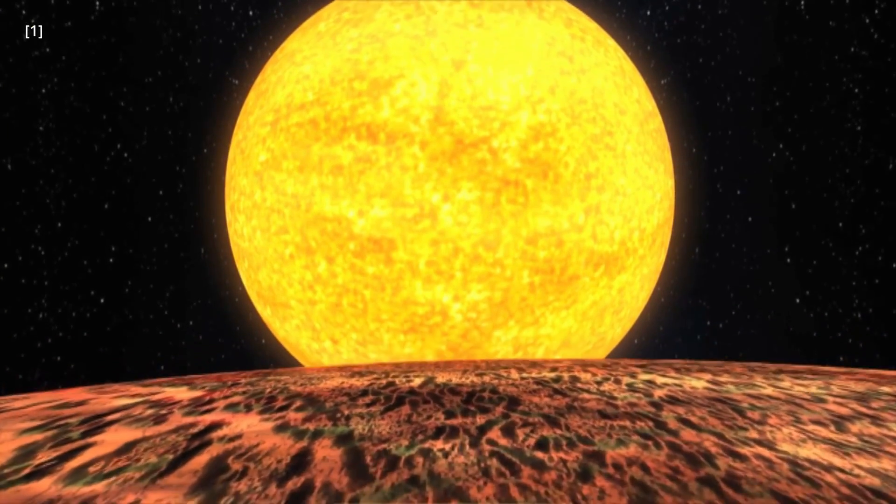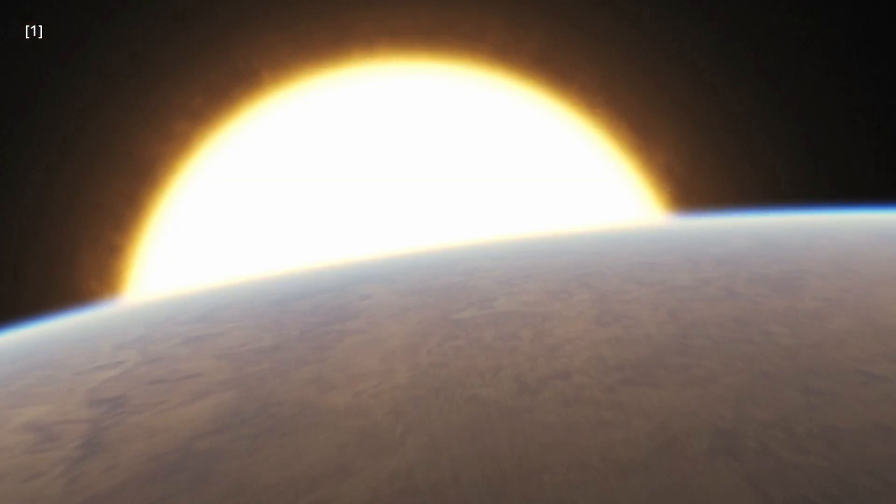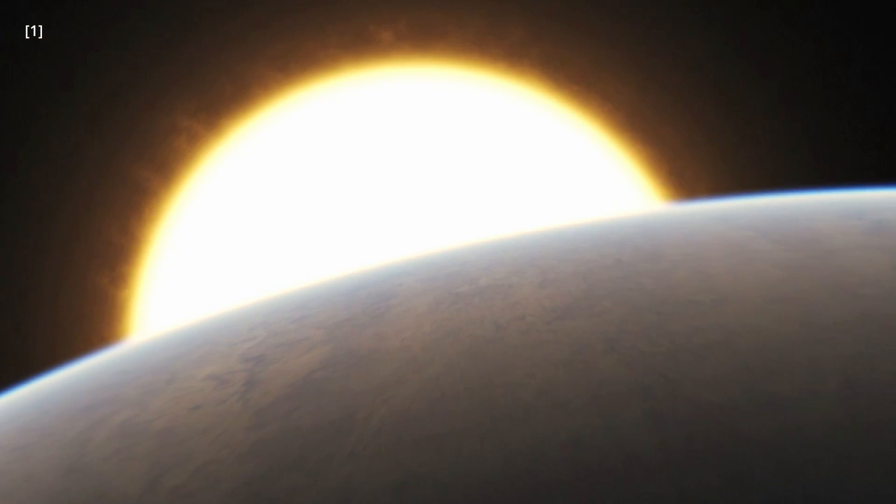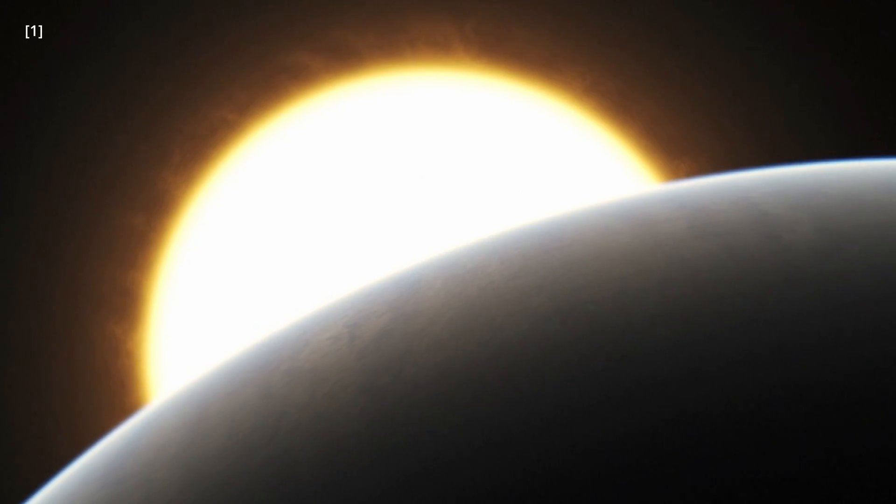Kepler-438b is about 1.5 times the size of Earth, and it orbits in the habitable zone of its star, which means that temperatures there could be just right for liquid water to exist on its surface.